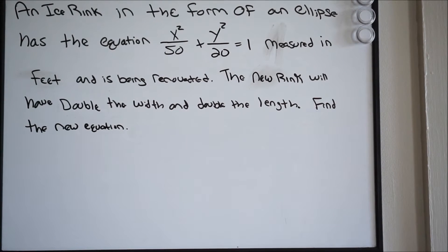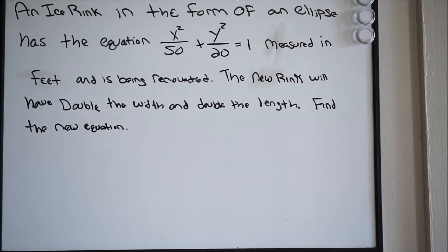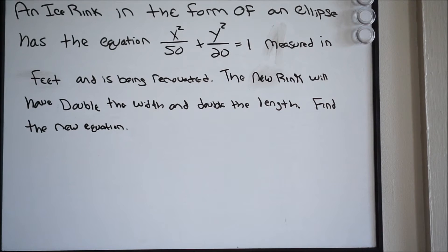Alright guys, so here we have another word problem dealing with an ellipse. Let's go ahead and read it and talk about how we're going to set it up. It says an ice rink in the form of an ellipse has an equation — measured in feet — and is being renovated. The new rink will have double the width and double the length. They tell us to find a new equation.